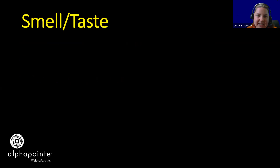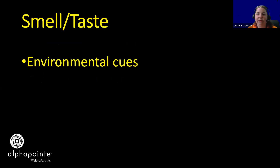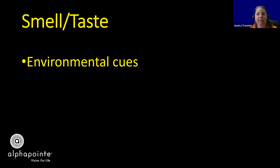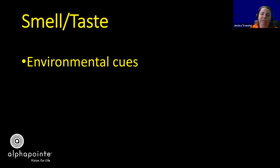The next sense to talk about is smell and taste. Thinking about environmental cues: one of my favorites is walking by Bath and Body Works at the mall — students can smell it from a pretty good distance and know where they are. Stores like Abercrombie and Fitch and Lush also have their own scent that you can smell from a good distance, so we can use those to understand where we are in our environment.